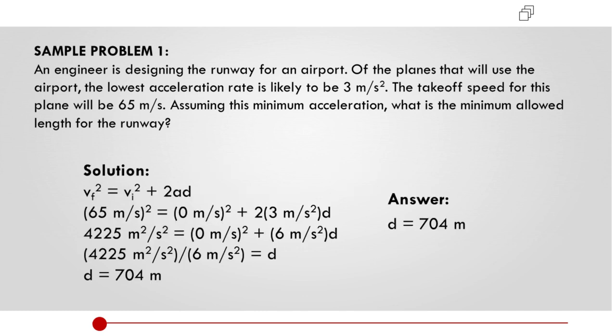For the solution, we can substitute the given to the equation. The final velocity is 65, 65 squared is 4,225 meters squared per second squared is equal to, since the initial velocity is 0, we can cancel it out, plus 2 times the acceleration, which is 3 meter per second squared times the distance. 4,225 meters squared per second squared is equal to 2 times 3 is equal to 6 meters per second squared times the distance. We can divide both sides by 6 meter per second squared to get the distance. Distance equals to 4,225 meters squared per second squared over 6 meter per second squared. Distance equals to 704 meters. So the answer is 704 meters.